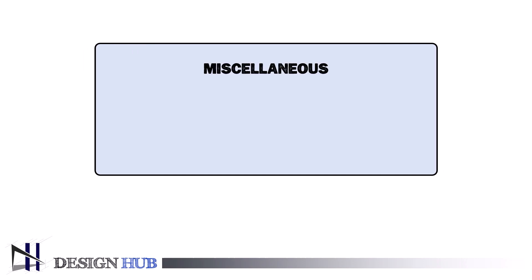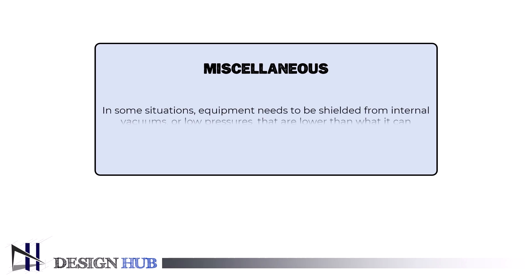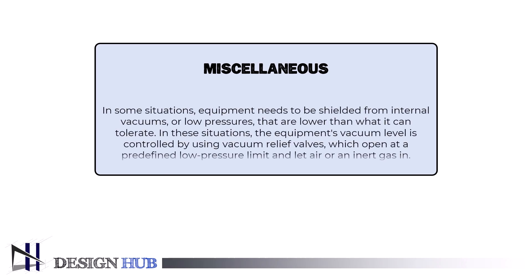Now let's see one miscellaneous condition that arises in the safety relief valve. In some situations, equipment needs to be shielded from internal vacuums, or low pressures that are lower than what it can tolerate. In these situations, the equipment's vacuum level is controlled by using vacuum relief valves, which open at a predefined low-pressure limit and let air or an inert gas in.